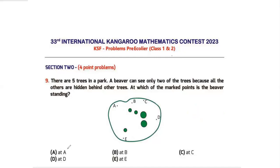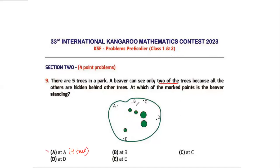For example, if you are standing at point A, looking at the trees, you'll be able to see this tree, this tree, this tree, and also this tree — so at A you'd be able to see four trees. A is not the answer because the question says the beaver can see only two trees. Similarly, if standing at B, you'd be able to see about three or three-and-a-half trees, so B is also not the answer.